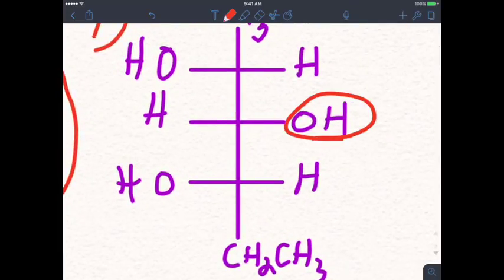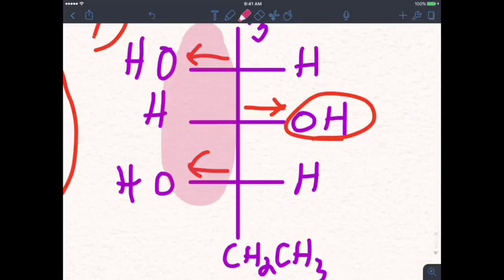But the diastereomer, because one of the sides is reversed, if you draw the dipole moments of them, these two would point the same direction as before, but since this one points the other direction, you kind of have a tug-of-war going on where this one, since it's pulling in the other direction, partially cancels out the dipole moments on the other side.